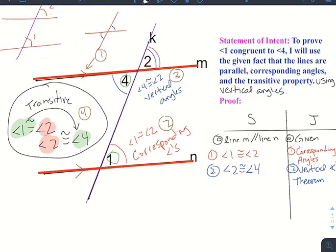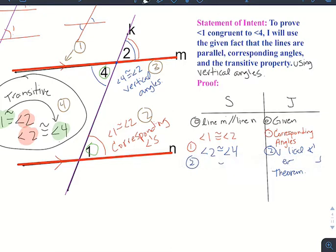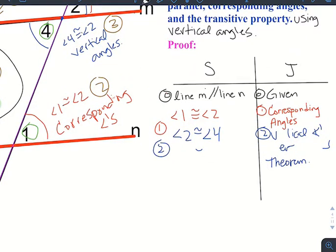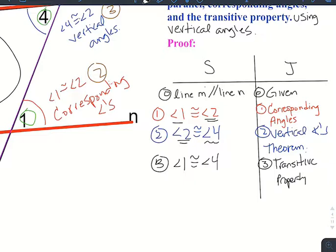That's out of alignment - there we go. Since we have angle 1 congruent to angle 2 and angle 2 congruent to angle 4, we can make the statement that angle 1 is congruent to angle 4. And that's going to be because of the transitive property. So we can stop here, we're done.